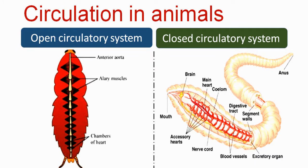If a true body cavity is present, those animals are known as coelomate. If a false body cavity is present, they are known as pseudocoelomate animals. In some animals, coelom is absent, but a body cavity is present that is filled by blood — this is known as a haemocoel.